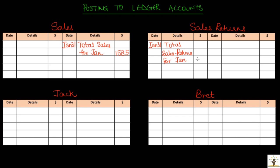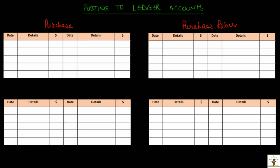In customer accounts, transactions are recorded individually. In Jack's account, debit side Jan 12, details Sales, amount $400. On Jan 28, debit side Jan 28, details Sales, net amount after trade discount = $285. For Brett's account, debit side Jan 24, details Sales, net price after trade discount = $900. On Jan 29, Brett returned part of the goods — recorded on the credit side of Brett's account, Jan 29, details Sales Returns, amount $180.